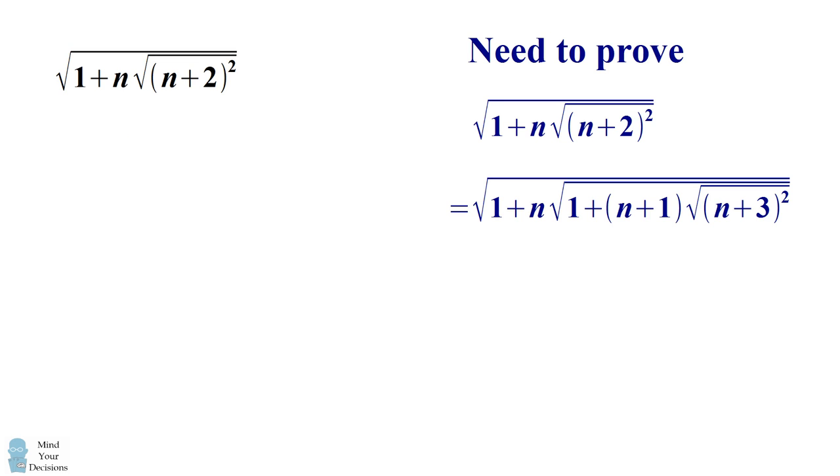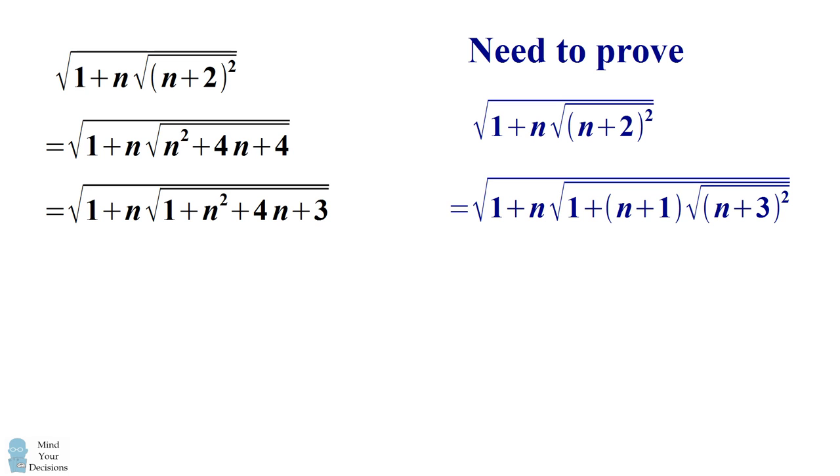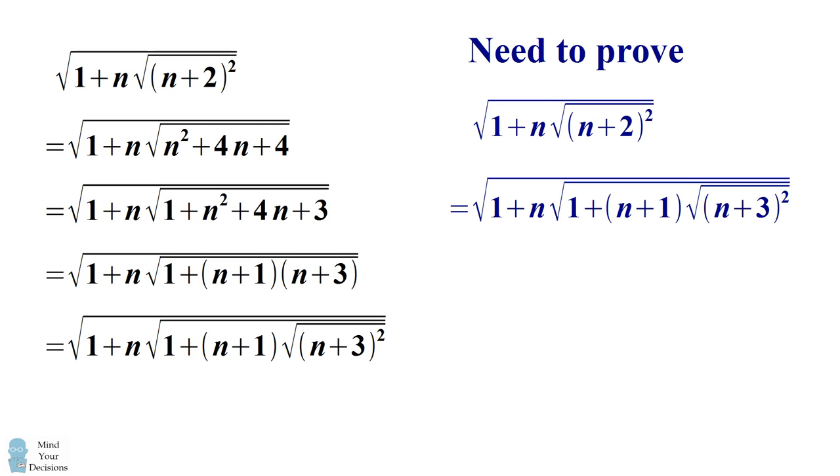Algebraically, we start out with our original term and expand out the square. We can then rewrite this as 4 equaling 1 plus 3. We now factor out n² + 4n + 3 into the terms (n+1) times (n+3). And now we write a radical where we have the square root of (n+3)². And this gets us to what we wanted to prove.